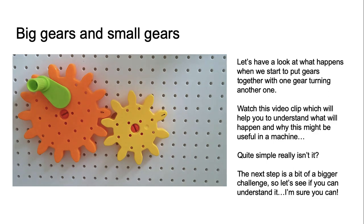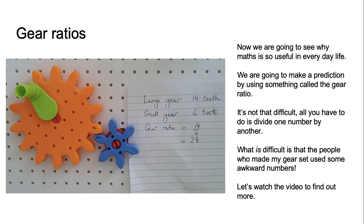So it's quite simple really, isn't it? The next step is a bit of a bigger challenge, so let's see if you can understand it — I'm sure that you can. Gear ratios. Now we are going to see why maths is so useful in everyday life. We're going to make a prediction by using something called the gear ratio. It's not that difficult — all you have to do is divide one number by another. Let's watch the video to find out more.